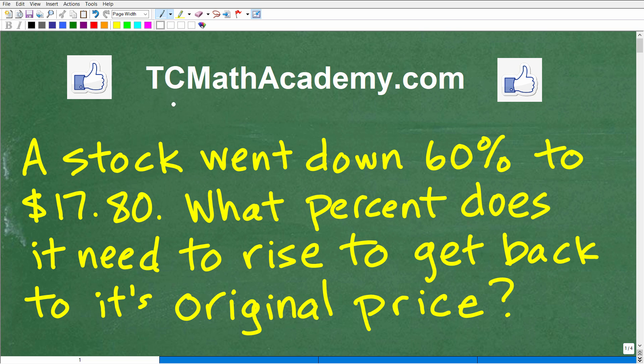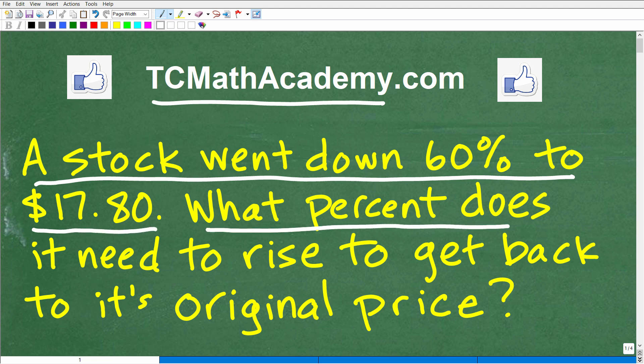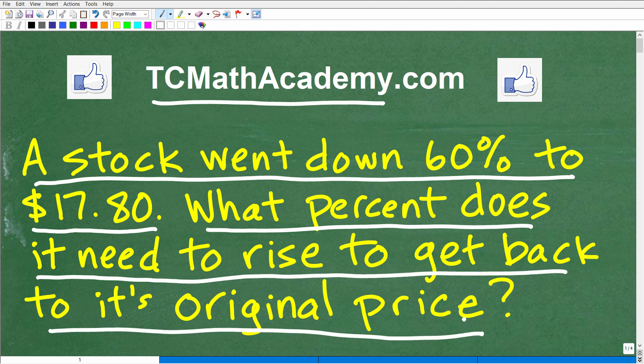Hello, this is John from TC Math Academy, and in this video we have a nice, interesting percent word problem. Let's go ahead and read it. It says a stock went down 60 percent to $17.80. So what percent does the stock need to rise to get back to its original price? The original price we're talking about is the price it was at before it went down 60 percent.